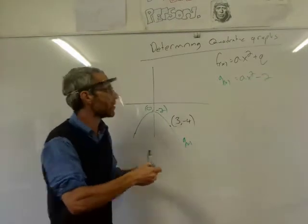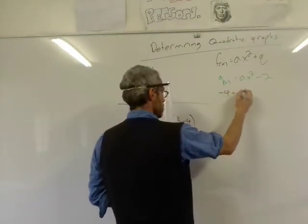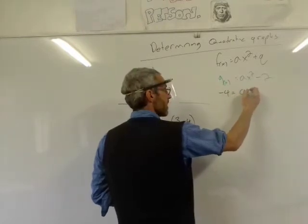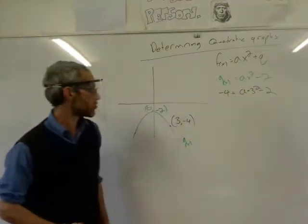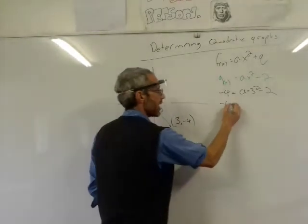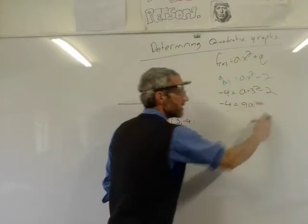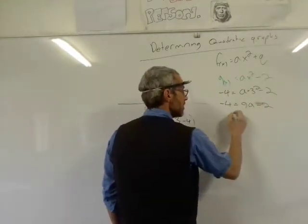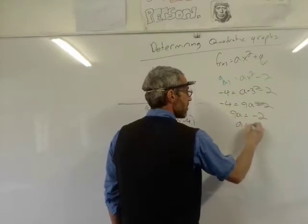We must put that point. So I'm going to say: minus 4 equals a times 3 squared minus 2. So minus 4 equals 9a minus 2. 9a equals minus 2. a equals minus 2 over 9.